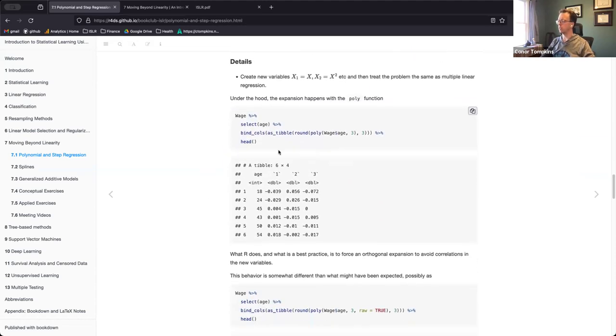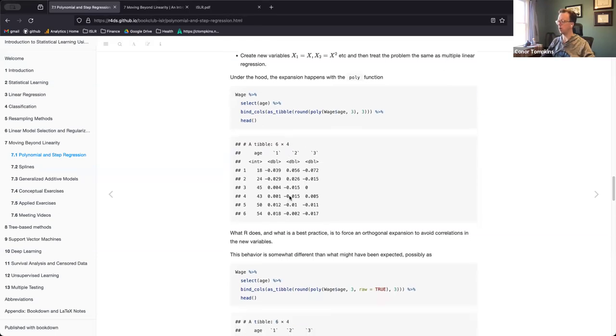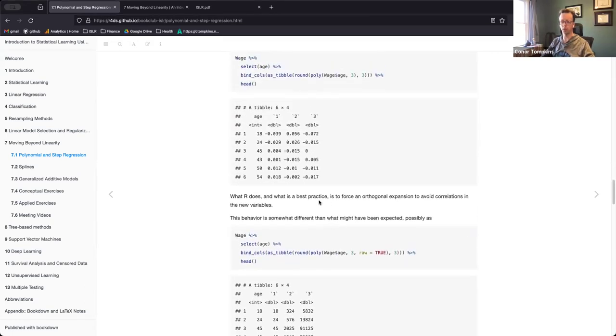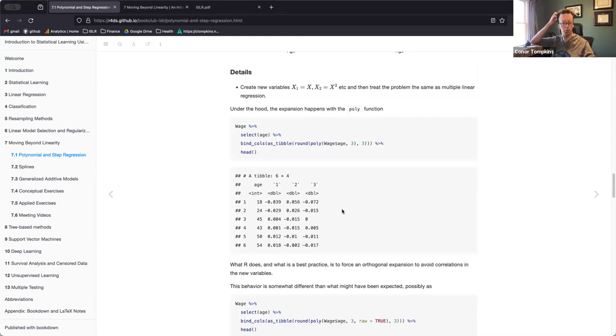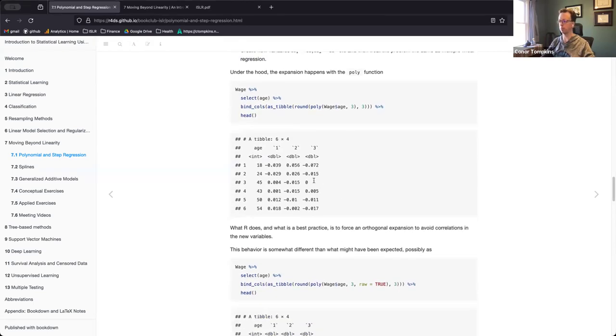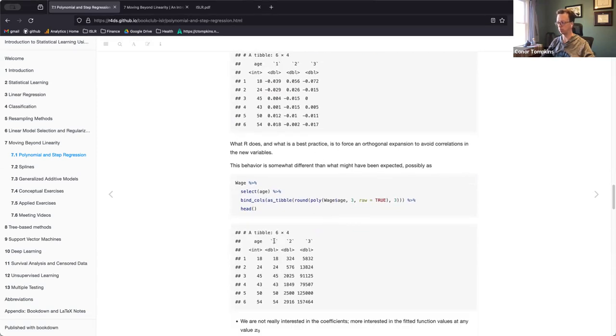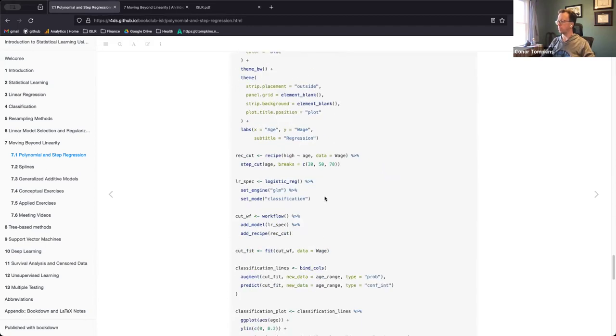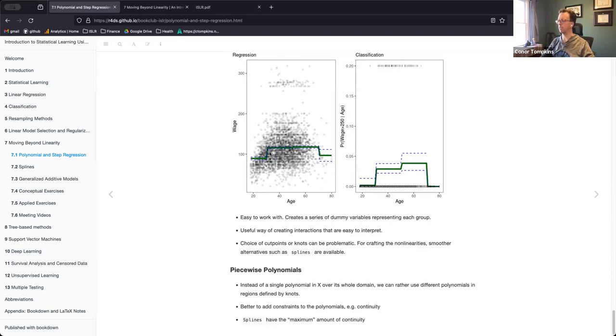So this is just recreating that plot from the book but with tidy models. I found this was interesting. When it expands the formula there with those additional powers, it's not just age squared and age cubed, they do an orthogonal translation which I think is similar to principal components, so it removes the collinearity between these variables. It's not just a straight applying that math, they do some initial processing there.